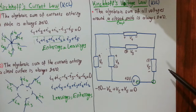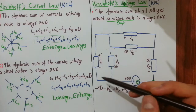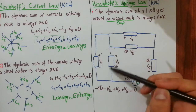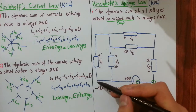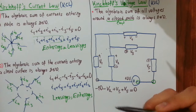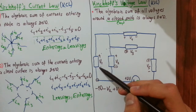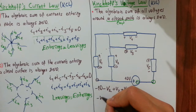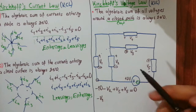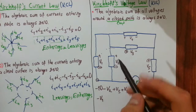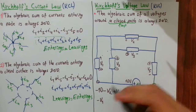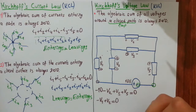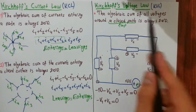Let's apply KVL on another loop. Notice this is also a mesh and we can apply KVL around it. Starting from this point, the first component we enter from its minus terminal gives minus V1. The second and last component we enter from its positive terminal gives plus V2. We equate the whole expression to zero by KVL.